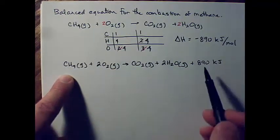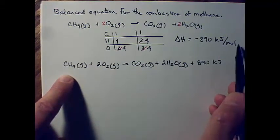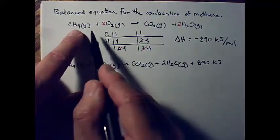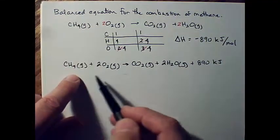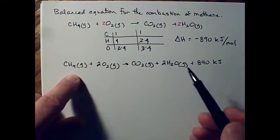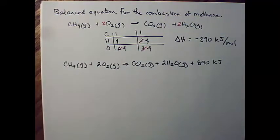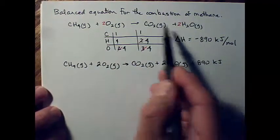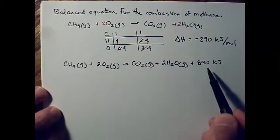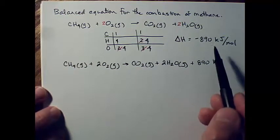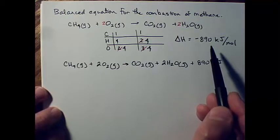So you can have the delta H broken out — that means the change in the system. If you include the energy in the equation it's telling us what's happening to the surroundings, where we are. This is what's happening with the chemicals; this is about you. But it's important to remember what's happening in the system is not about you.